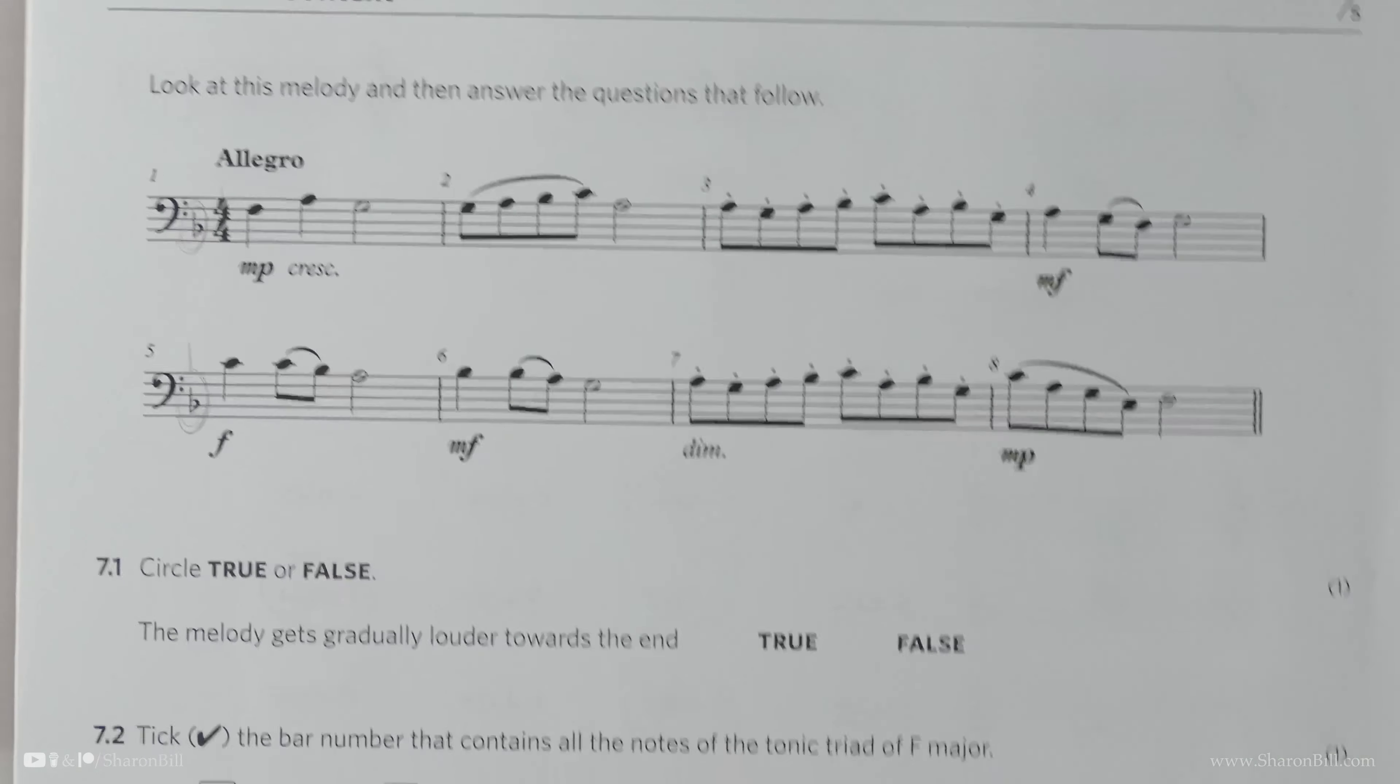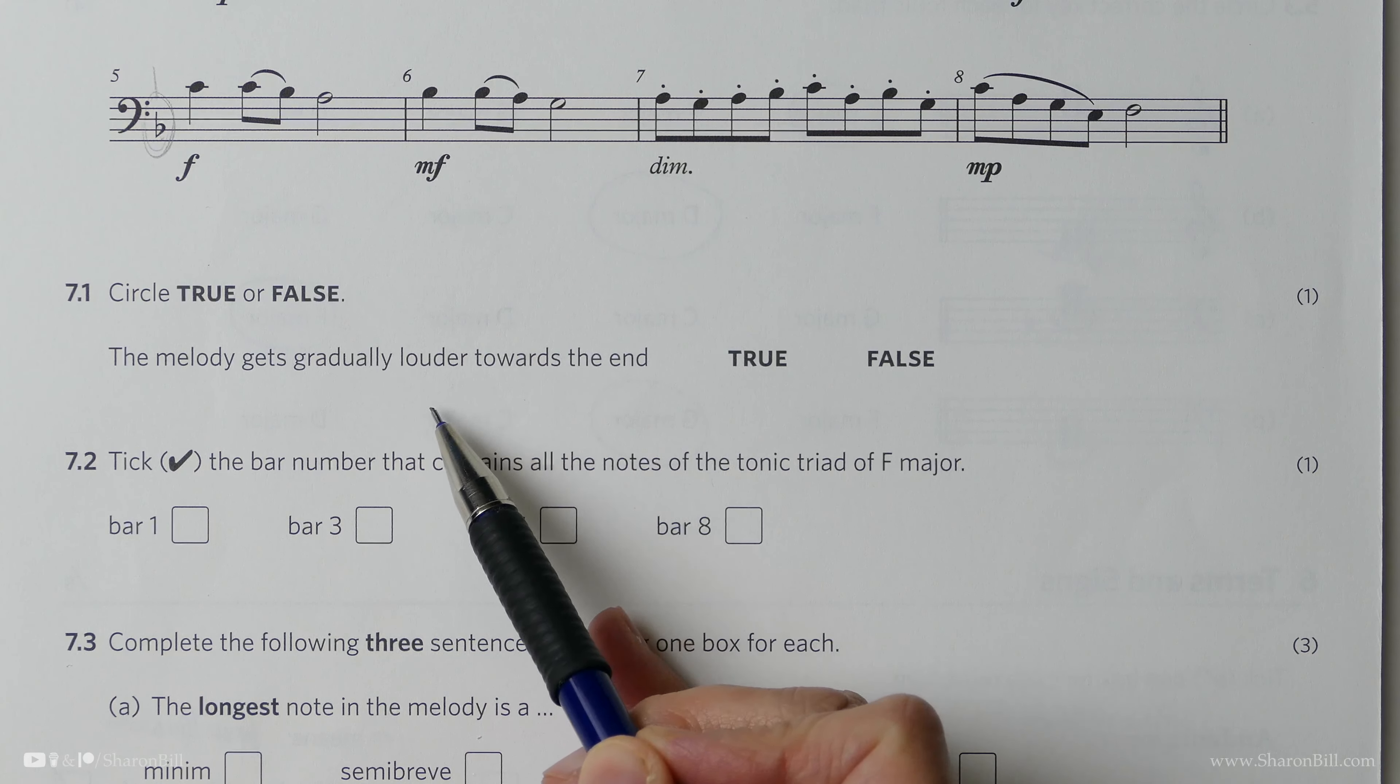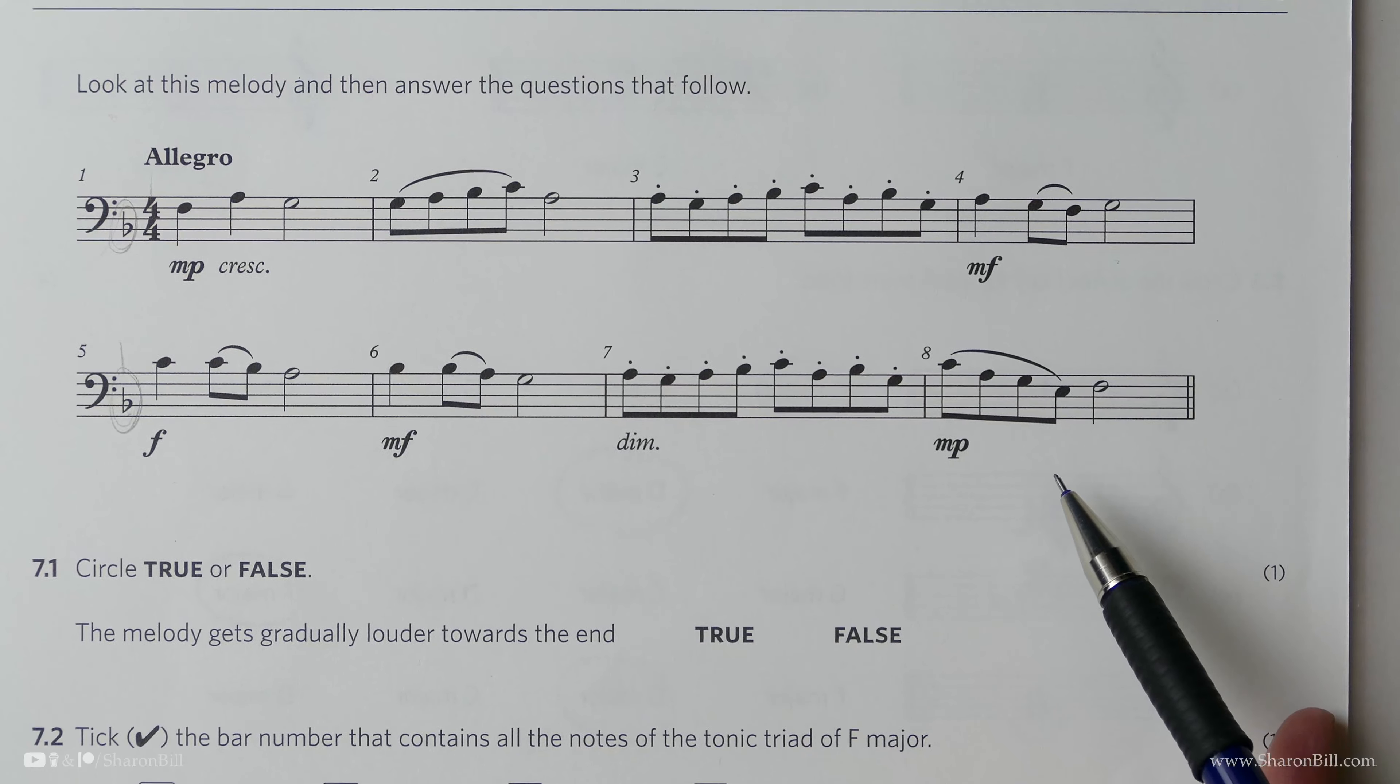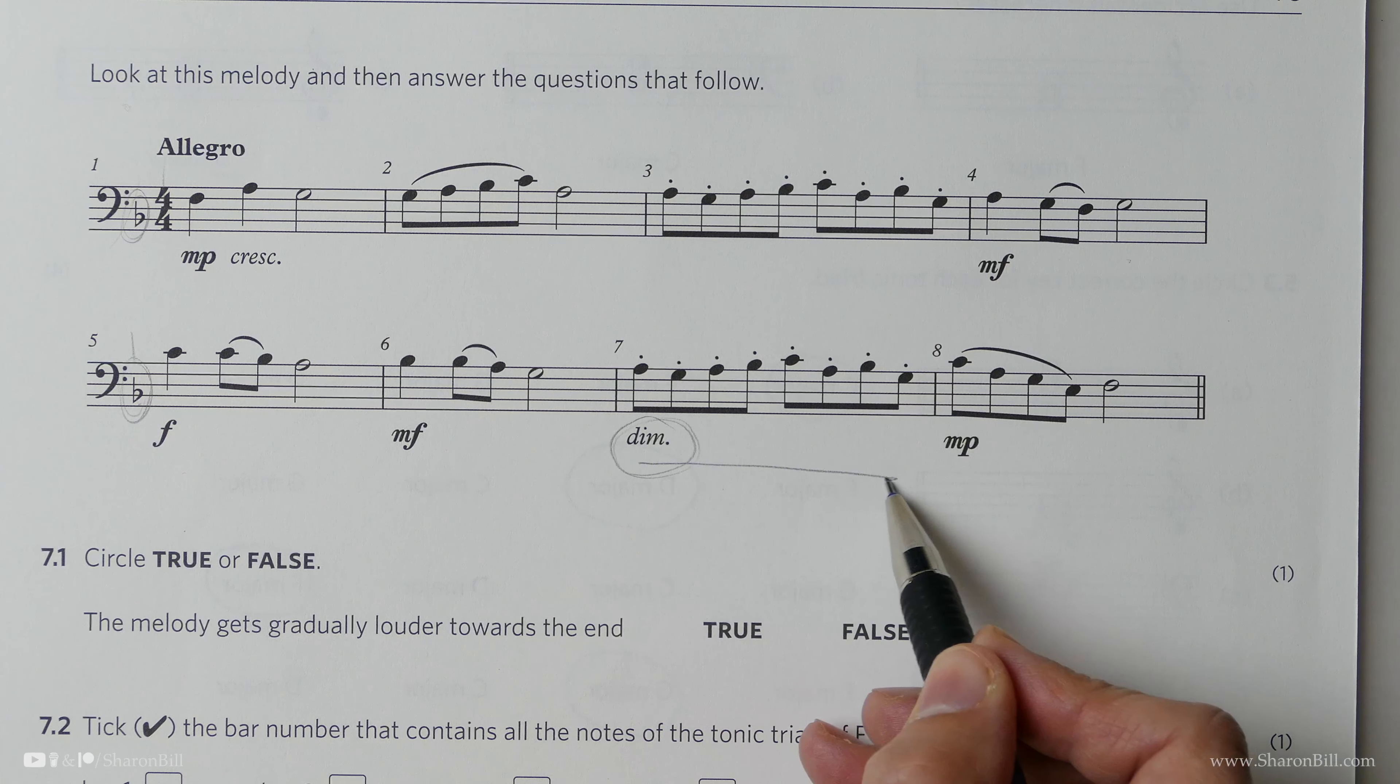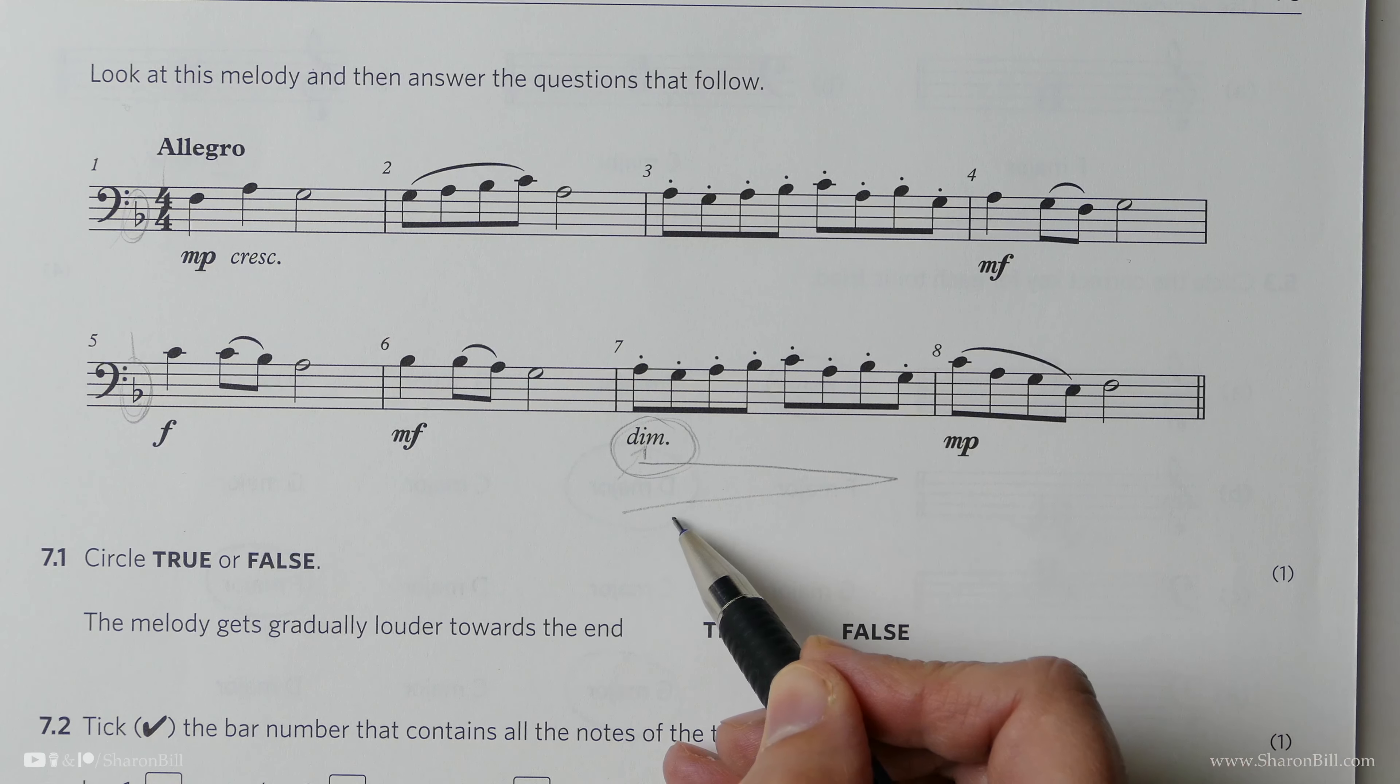So the first question asks us to circle, is it true or false that the melody gets gradually louder towards the end? So let's look at the melody towards the end. So we're looking in these final bars. And this is our big clue, diminuendo, which would look like this as a symbol. And we can see from the root word, it's diminishing, it's getting quieter.